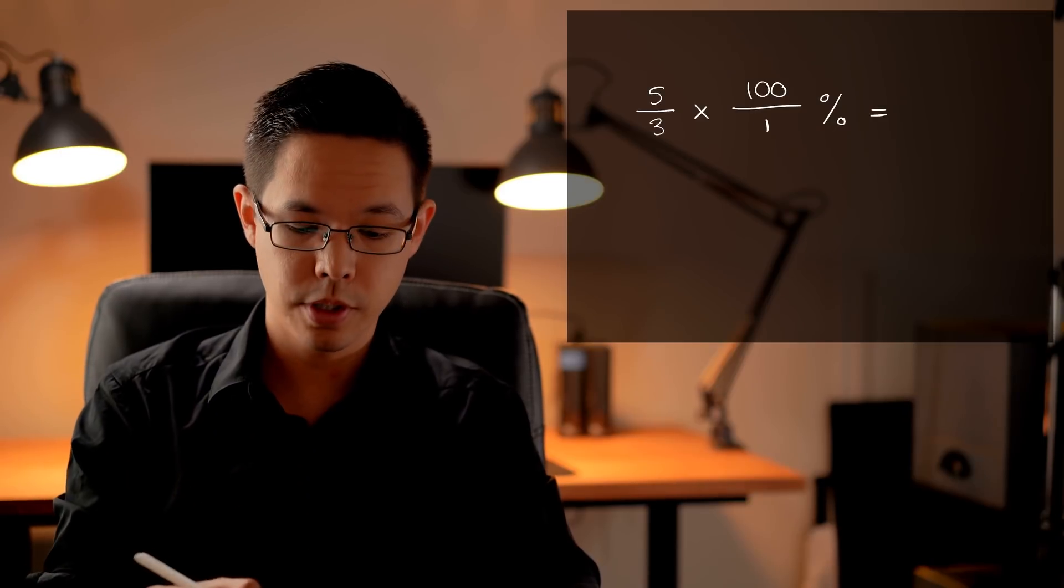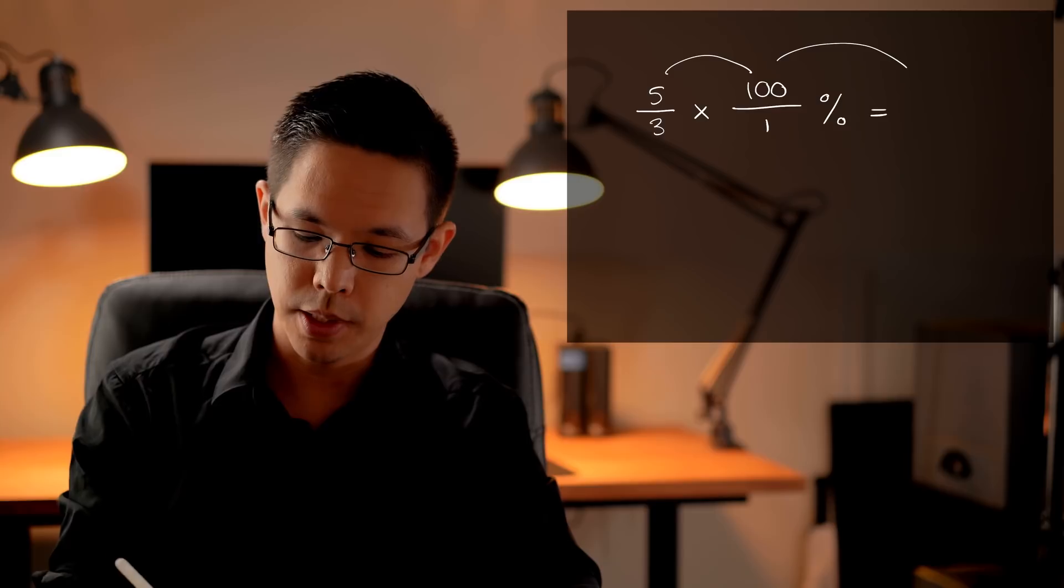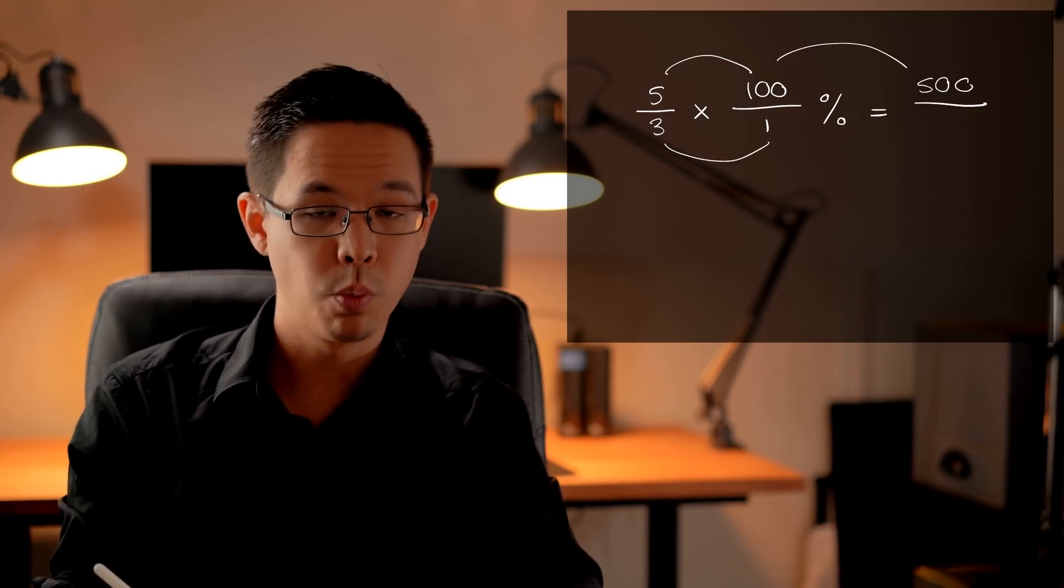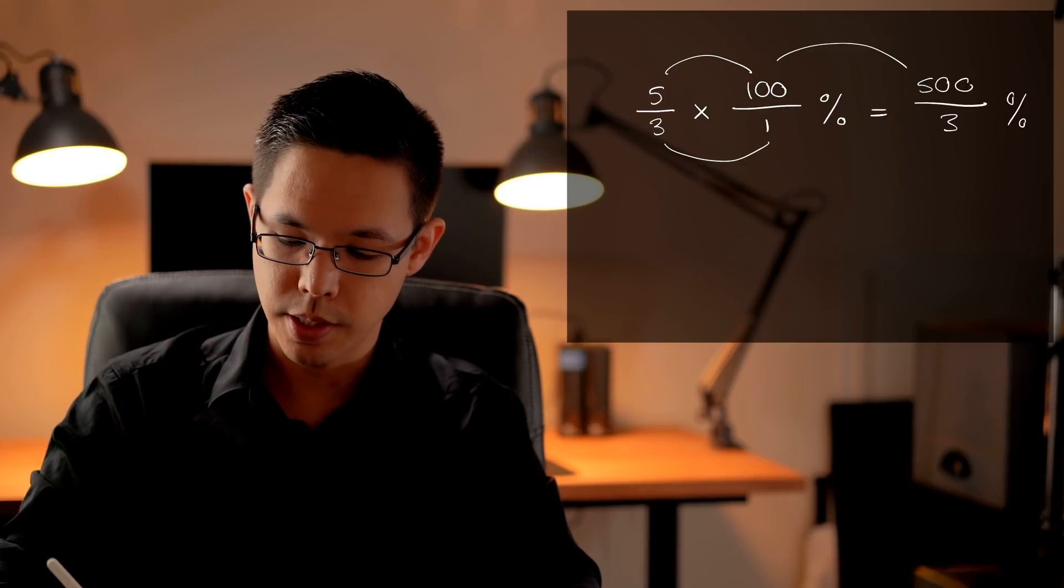You multiply your fraction with 100 over 1. I like to attach the percentage sign now so I'm just going to stick it there and now it's just a process of multiplying the numerators. So 5 times 100 gives me 500 on top and 3 times 1 on the bottom produces 3 and I'm going to carry across that percentage symbol.